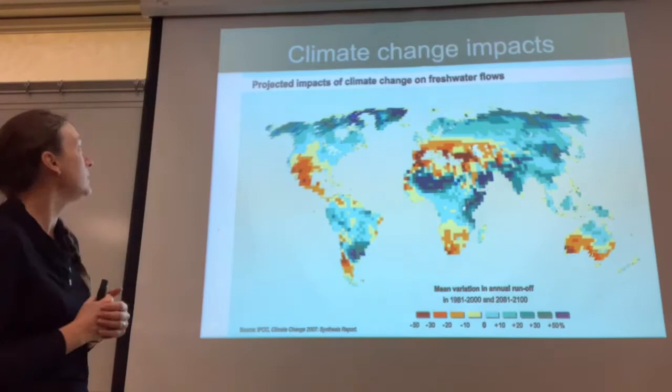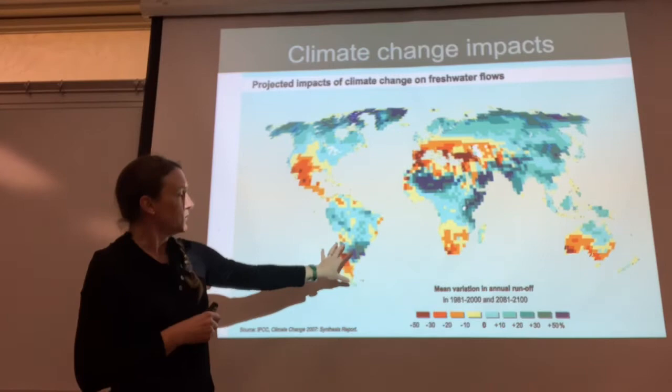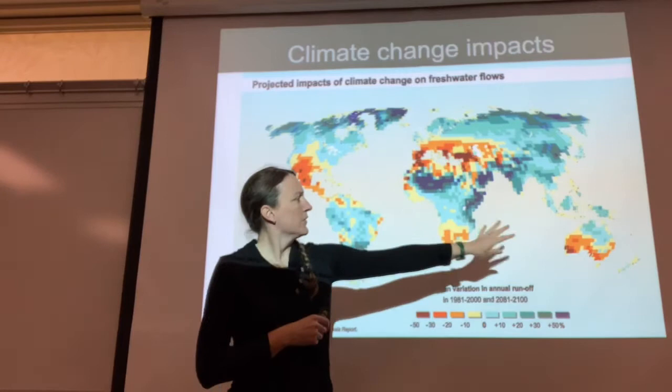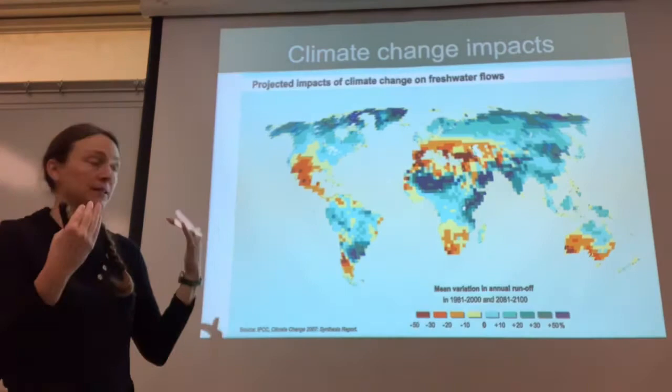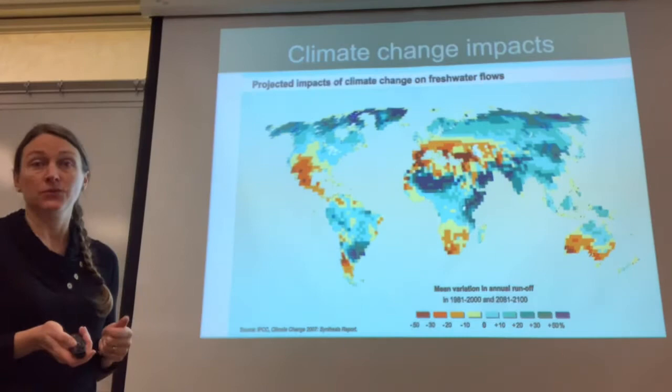We're going to talk about some of these things in more detail. We have the projected impacts of climate change on freshwater flows. You can see some of these real hot spots in the desert southwest through Central America, Desert Patagonia, all throughout Europe and Central Asia, South Africa and Australia — areas where we're going to see projected decreases in mean annual runoff and water shortages. We can project these things using really complicated climate models, and our ability to do this has come very far in the past few years.